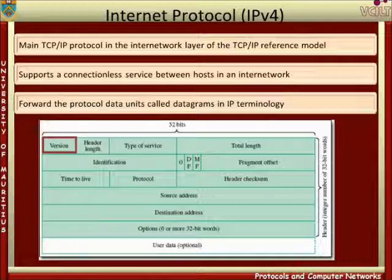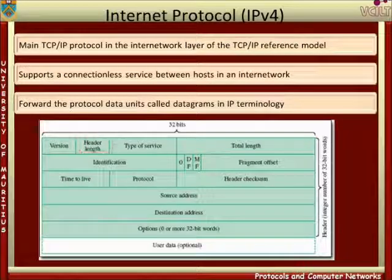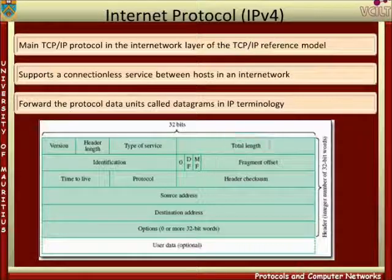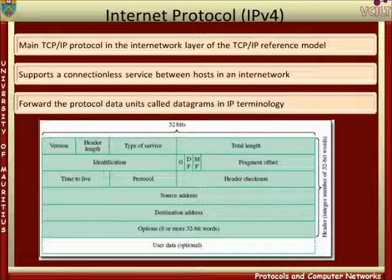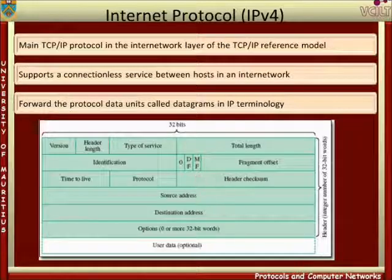Version number, 4 bits, identifies the version of IP that sent this datagram. Header length, 4 bits, contains the number of 32-bit words in the header. Type of service, 8 bits, identifies the service requirements such as reliable data transfer. Total length gives the total number of bytes in the header and user data field. Identification provides a means of identifying datagrams that carry parts of the same data from the transport layer.